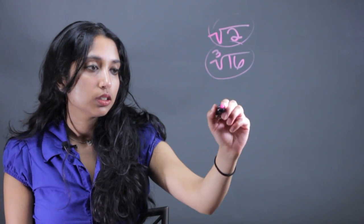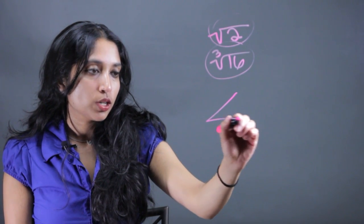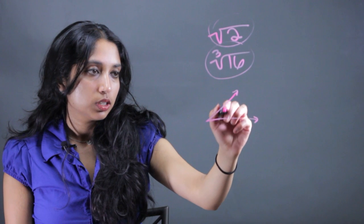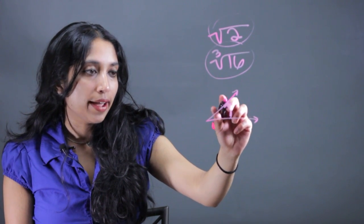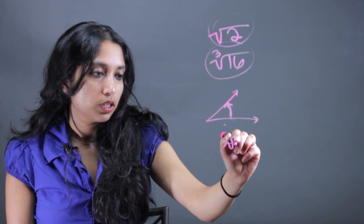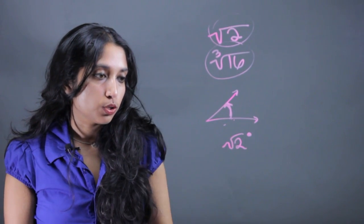Now a degree is a measure of an angle and this can very well be an irrational number, so you could have a degree of an angle that was root 2 degrees.